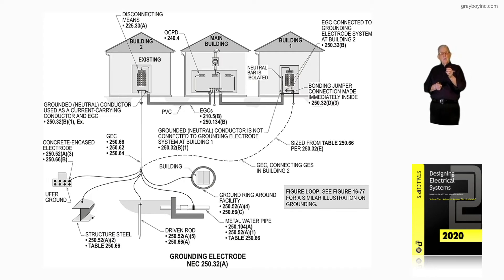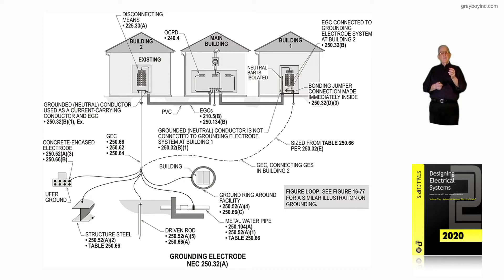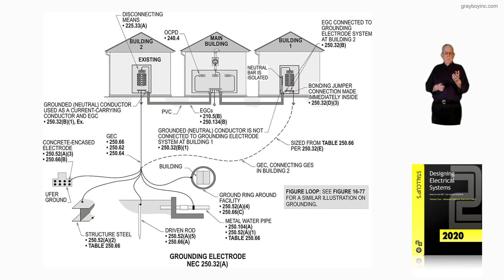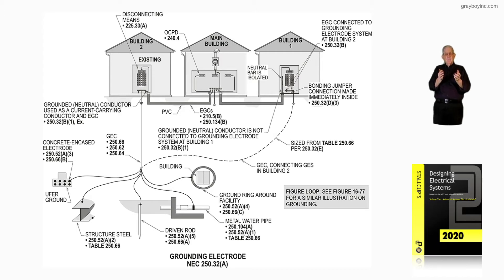You may have a metal water pipe with 10 feet or more of it in the earth. You may have a ground ring encircling the building, possibly even for lightning protection. And then you may have a driven rod. If you had all of those, they would have to be bonded in accordance with 250.50 if possible, to create a grounding electrode system.